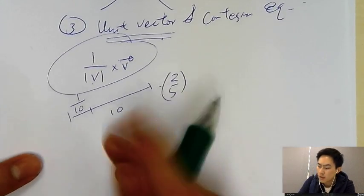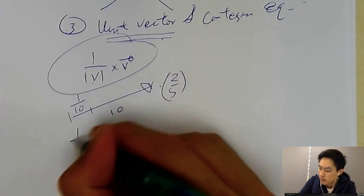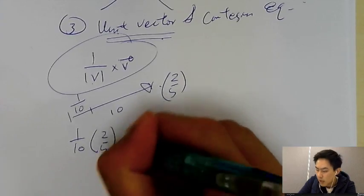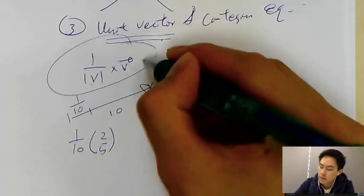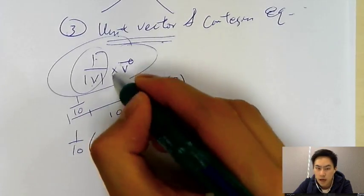So that will be one unit of that, pointing this way. Originally is 2, 5. So one unit of that will be 1 over 10 times 2, 5. This is unit vector: 1 over the magnitude, so this is 1 unit, then times the vector.